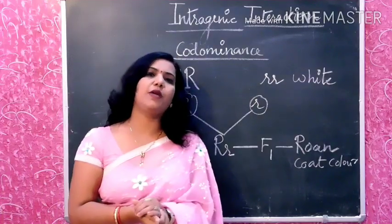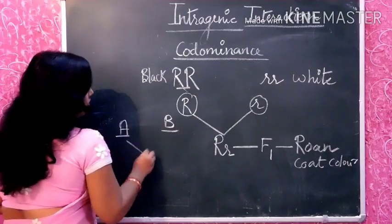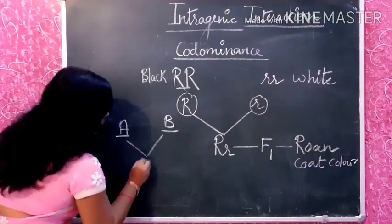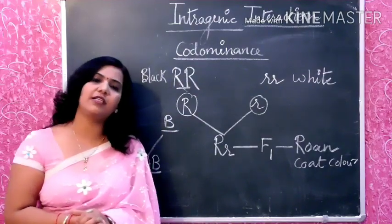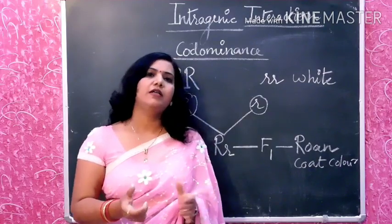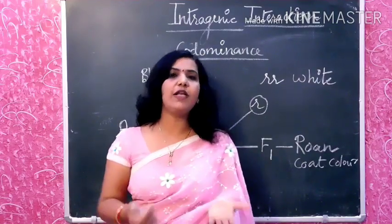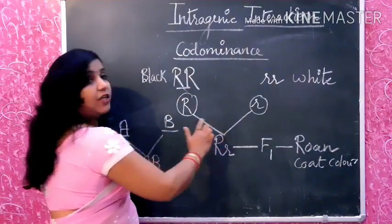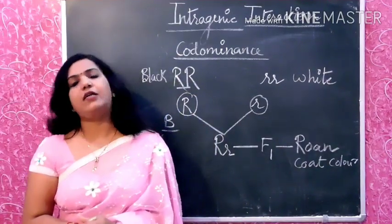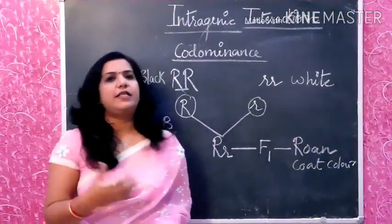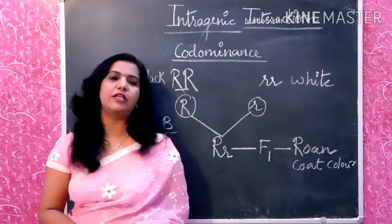Another good example is the ABO blood group. In the ABO blood group, if A blood group and B blood group are crossed, the resulting organism's blood group will be AB — meaning A and B are not showing any dominant-recessive relationship; both are contributing equally. Where alleles contribute equally, that inheritance pattern is called co-dominance. So this covers incomplete dominance and co-dominance. In the next videos, continue watching for complementary genes, supplementary genes, and further topics. Thank you.